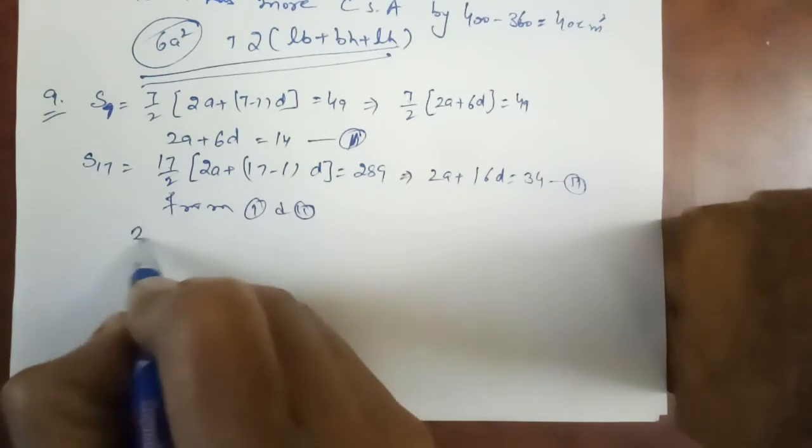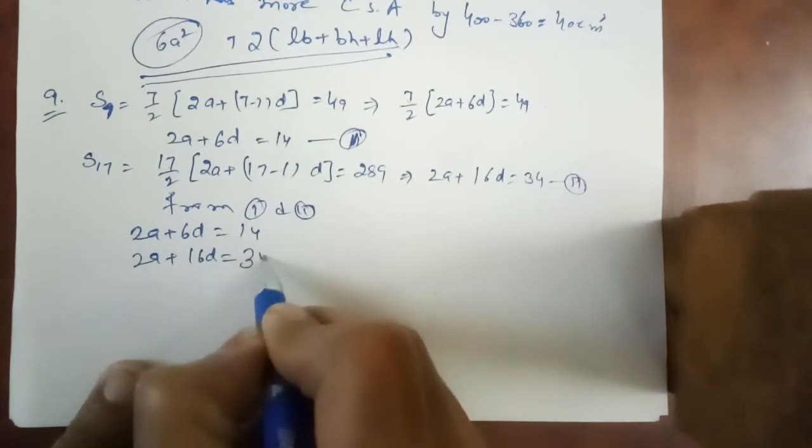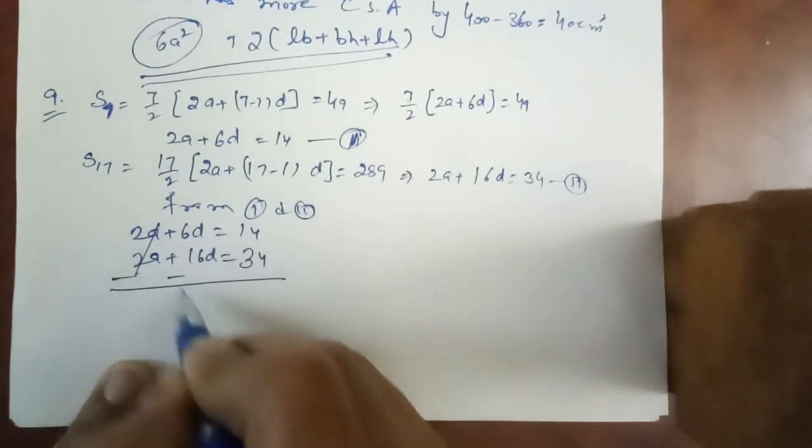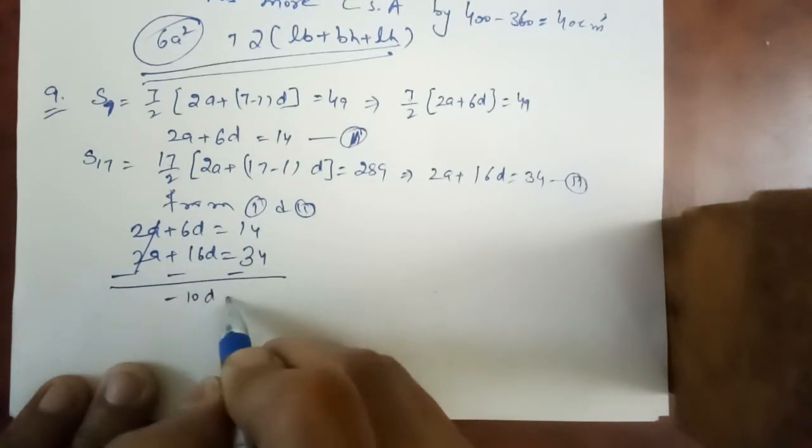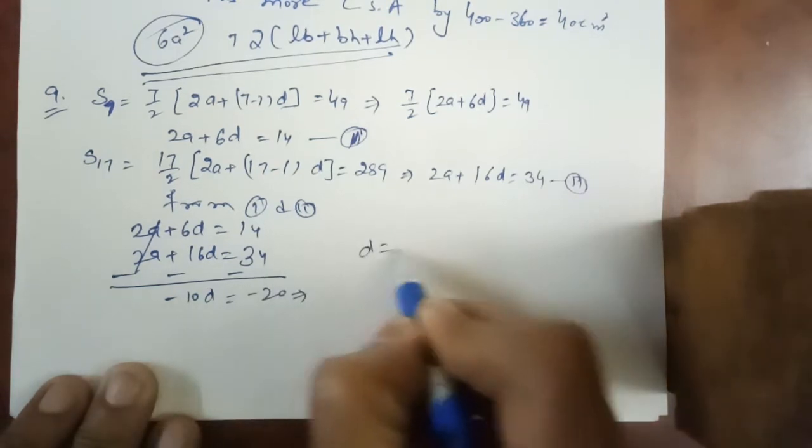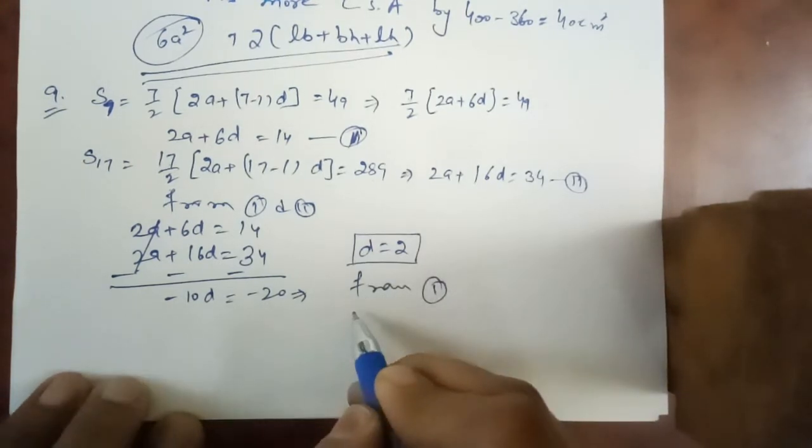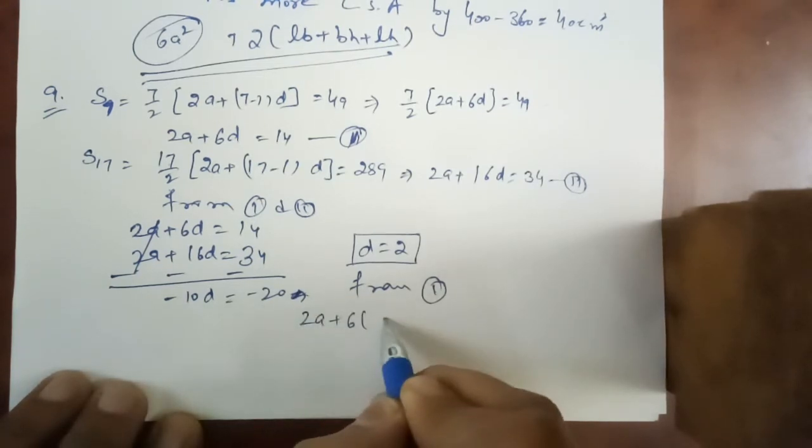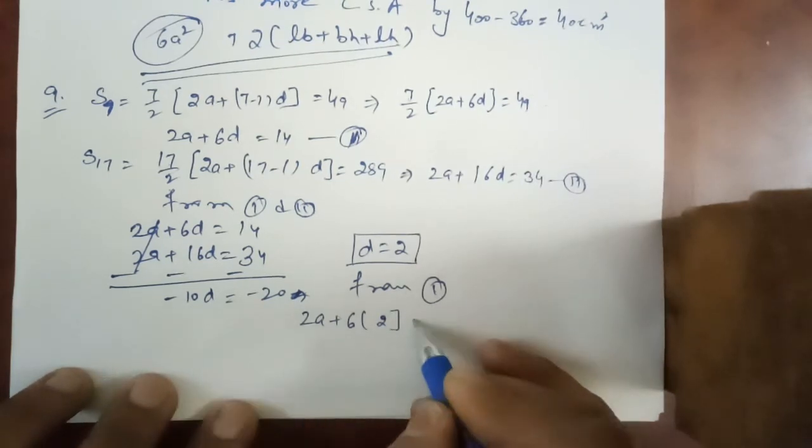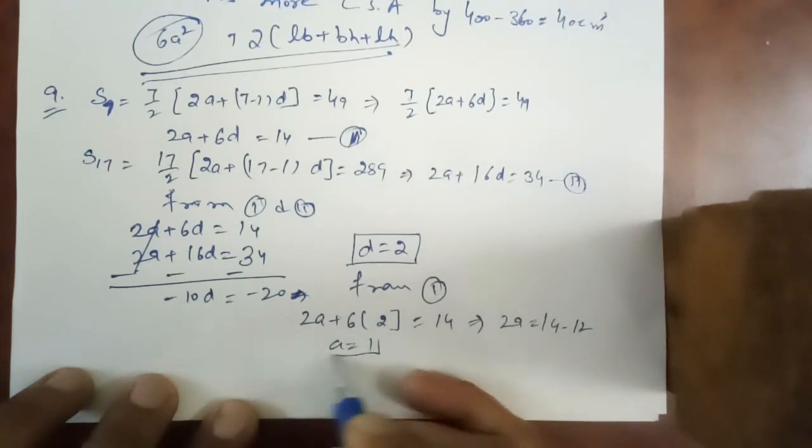Now from equations 1 and 2 we can find the value of D and A. 2A plus 6D is equal to 14, 2A plus 16D is equal to 34. Directly we can eliminate A by changing sign. Minus 10D is equal to minus 20, that is D is equal to 2. Now from equation 1, 2A plus 6 into 2 is equal to 14. 2A is equal to 14 minus 12, that is A is equal to 1.